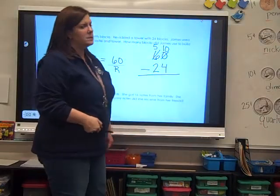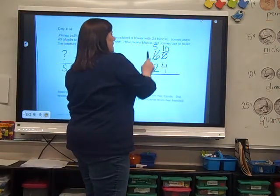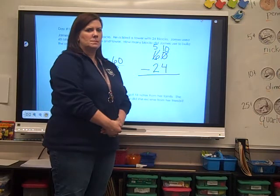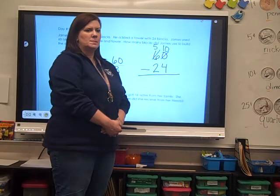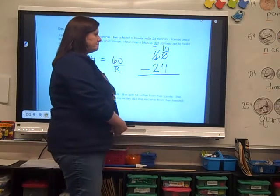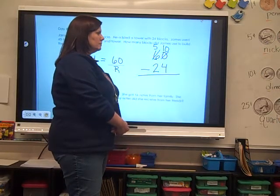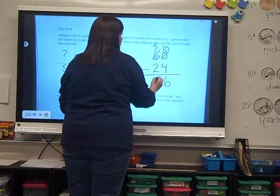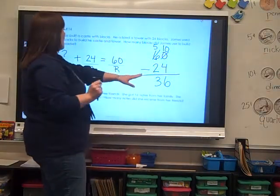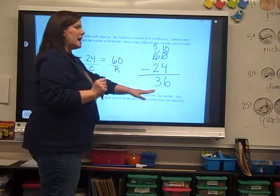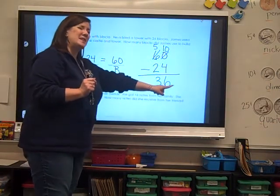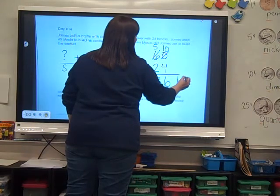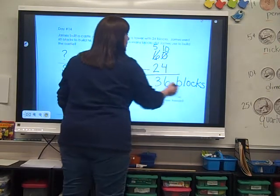Now you know what to do. Ten subtract four. Five subtract two. Go ahead. Ten subtract four. Five subtract two. I hope you did it on your own. So how many blocks did James use to build the castle? Thirty-six. Thirty-six what? Blocks. Thirty-six blocks.